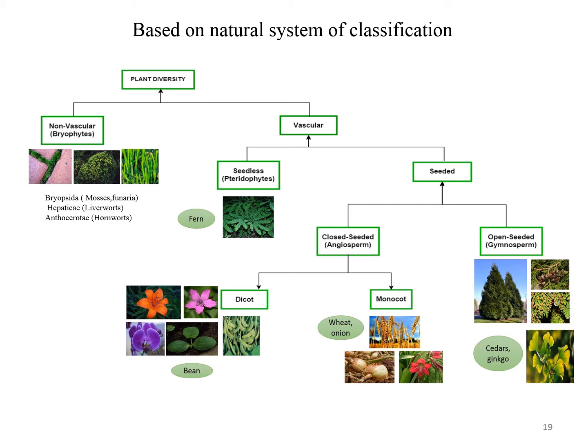Monocotyledons have only one seed leaf, while dicotyledons have two seed leaves. Examples of dicotyledons include beans, while monocotyledons include wheat, onion, rice, and maize. The other group of seeded plants, gymnosperms, are large trees and bushes producing cones. Their seeds are present but not enclosed in fruits.